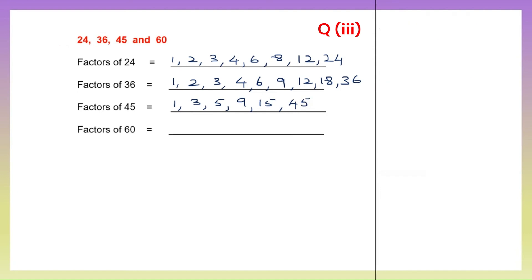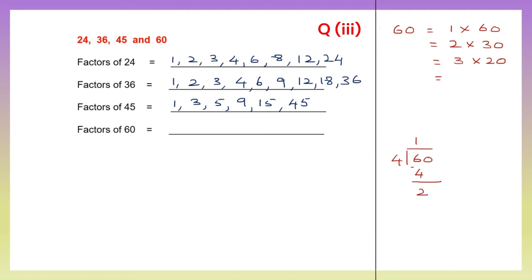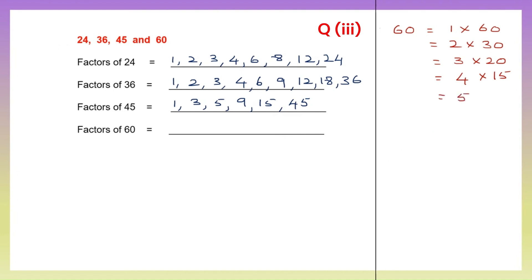Now we have to find the factors of 60: 1 into 60 is 60, 2 into 30 is 60, 3 into 20 is 60, 4 into 15 is 60, 5 into 12 is 60, 6 into 10 is 60. So the factors of 60 are 1, 2, 3, 4, 5, 6, 10, 12, 15, 20, 30 and 60. Quite a number of factors for 60.